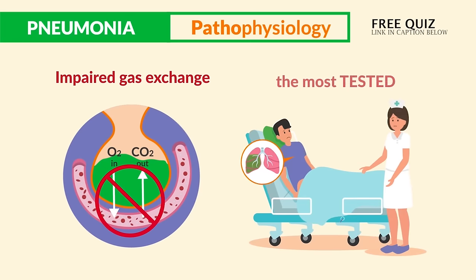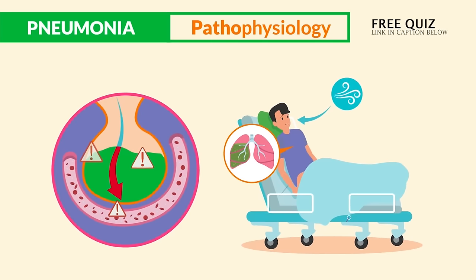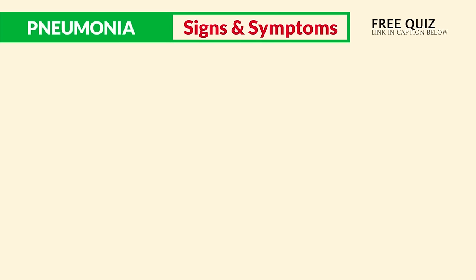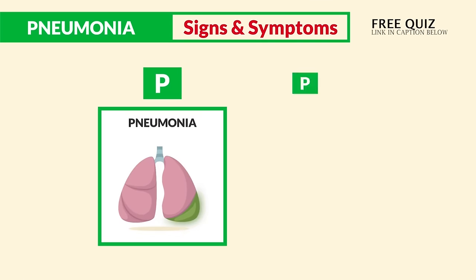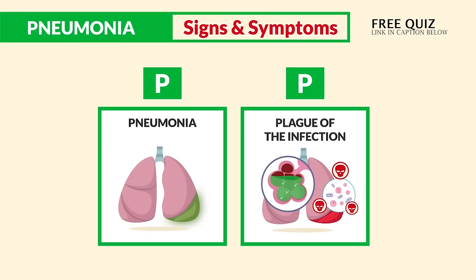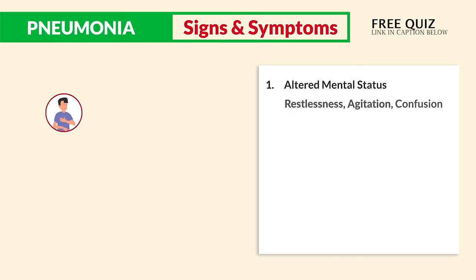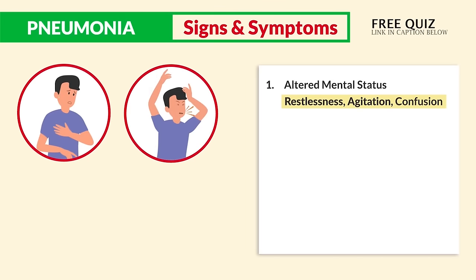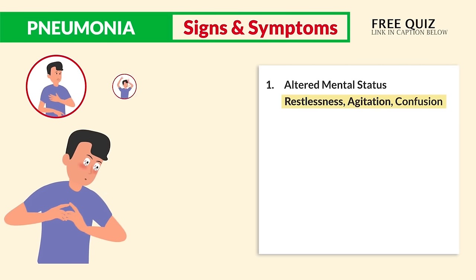Impaired gas exchange is typically the most tested nursing diagnosis for clients with pneumonia, which leads to ineffective breathing pattern as the body fights for air. For signs and symptoms, think P for a plague of infection inside the lungs. The top six most tested key terms: number one is altered mental status — restlessness, agitation, and confusion — these three are the earliest signs of hypoxia, so write them down because they are critical.